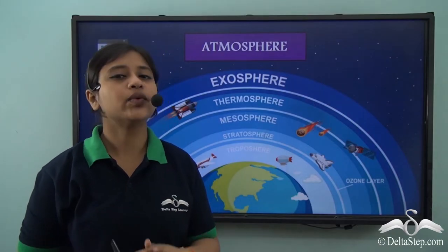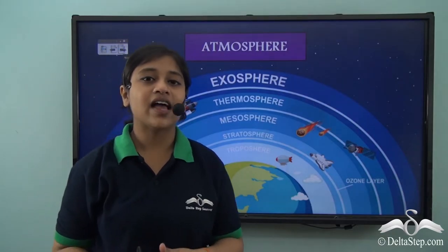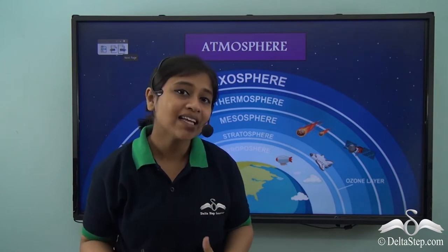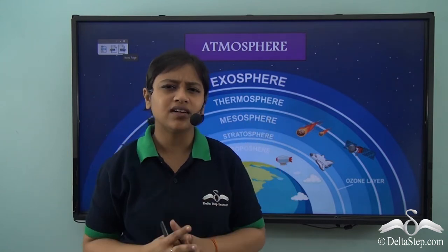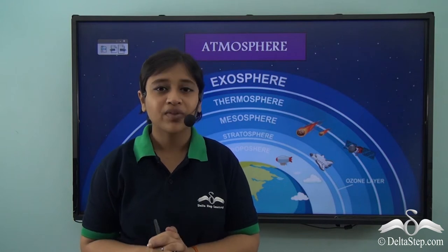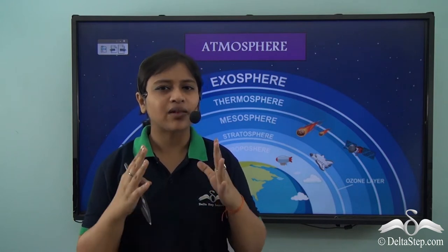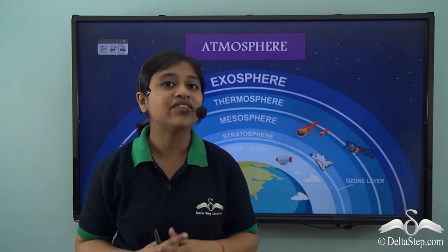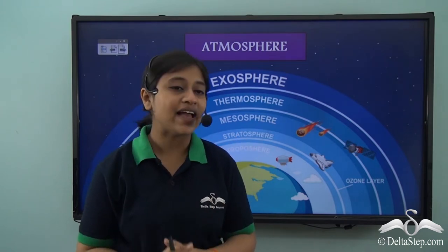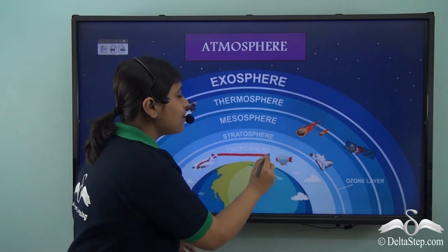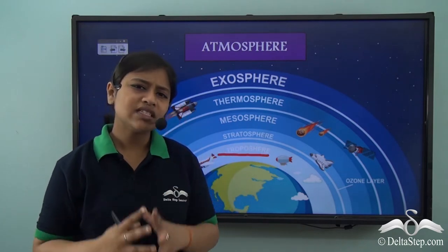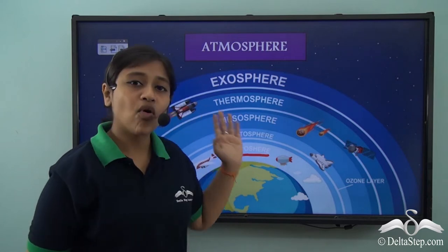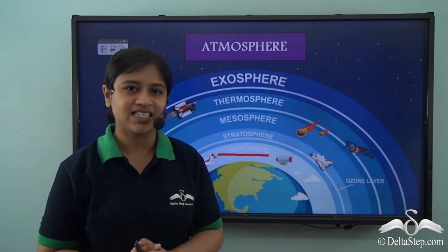In the last video we learnt that the atmosphere is very important. It is the blanket of air that surrounds the earth and keeps it warm. We also learnt that the atmosphere comprises five distinct layers and we learnt in detail about the very first layer, the troposphere. Today in this video we will learn about the other four important layers in detail.